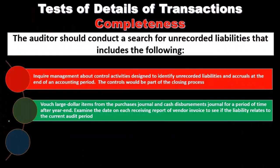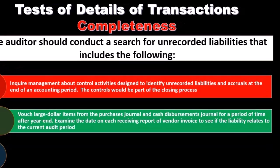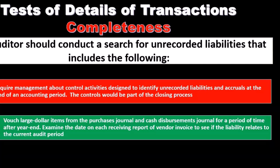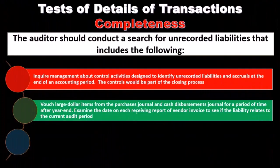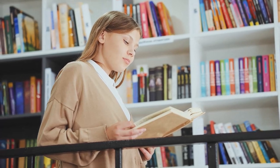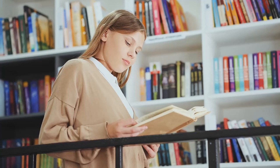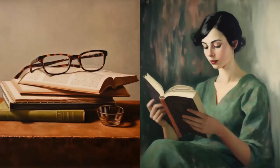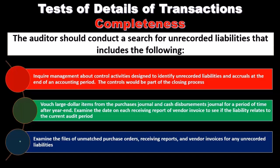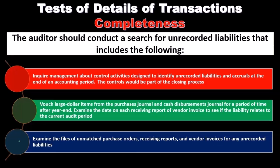We examine the data on each receiving report and vendor invoice to see if the liability relates to the current audit period. The receiving report is typically the triggering factor for recording a purchase — it indicates when we actually received the item. We want to confirm the item was put on the books in the correct time period, in accordance with the receiving report, and verify this by checking transactions after year end to see if items were recorded in the period the receiving report occurred.